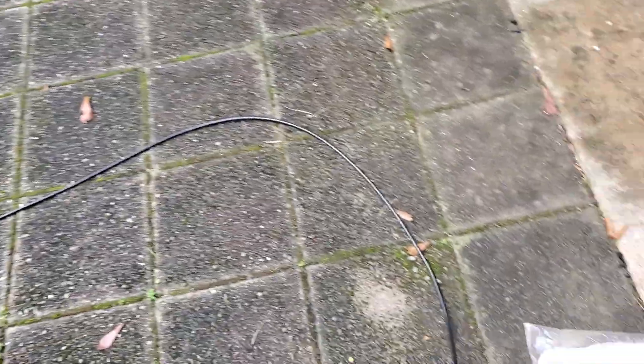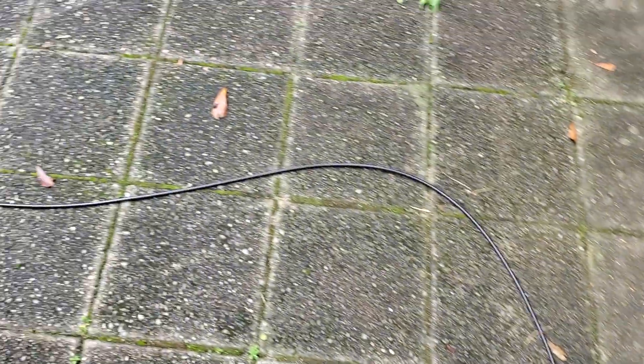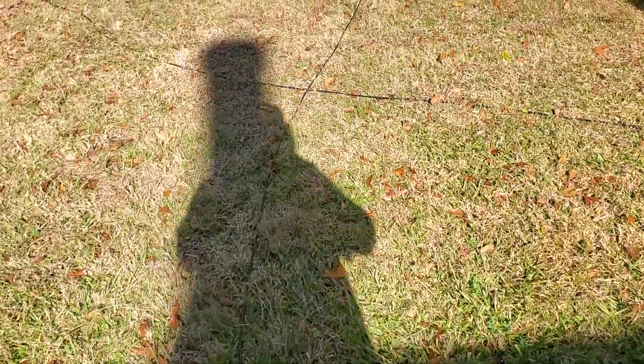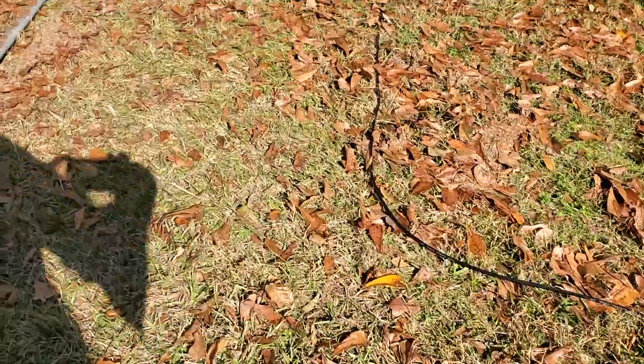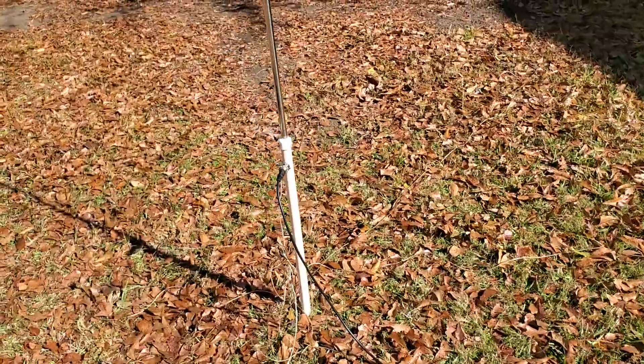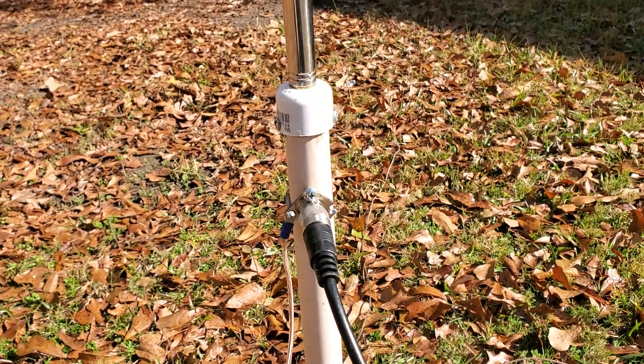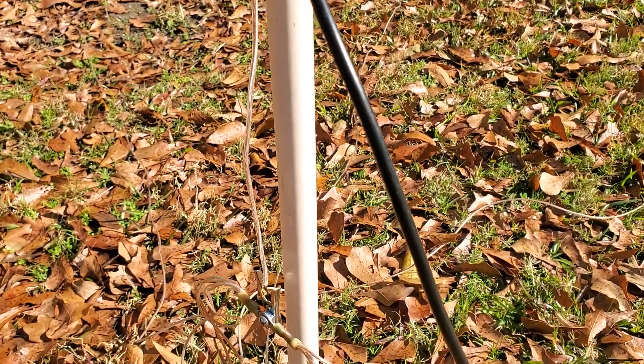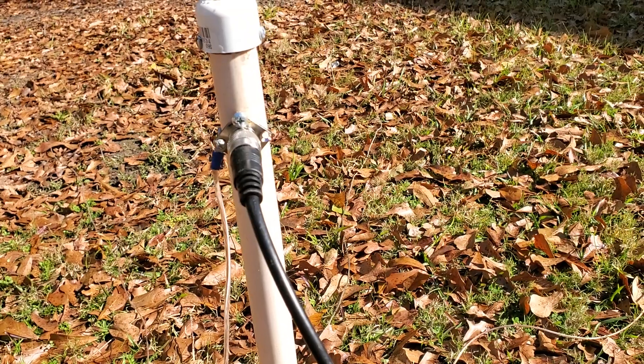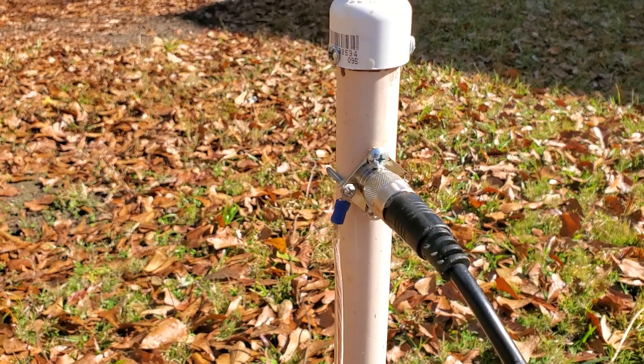Here's our coax coming off of the nano VNA and we're just going out here to the antenna. What the antenna consists of here is a piece of PVC that I had laying around the house—this came from a target stand. We have our coax connector that is attached to the PVC, as